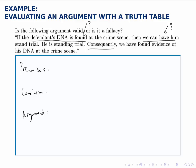So the first premise is if P then Q, which looks like this. The second premise is that he is standing trial, which we called Q. The conclusion, consequently, we have found evidence of his DNA, that's what we called P. So the argument looks like this: we have premises that look like P implies Q, and Q, and this argument claims that that proves P.